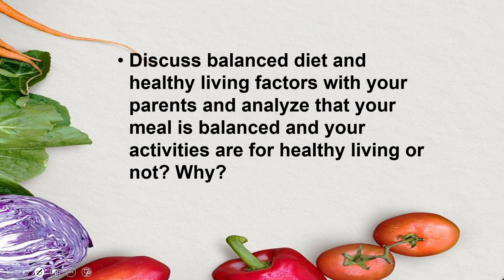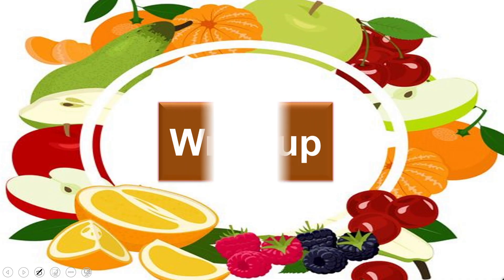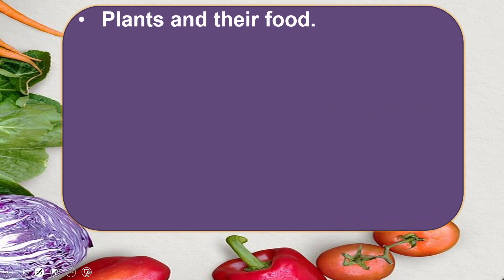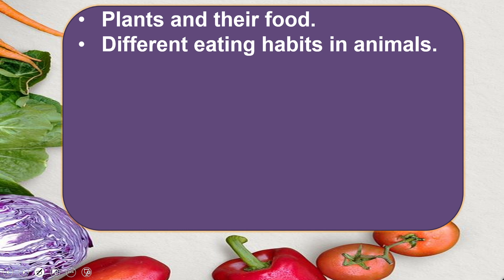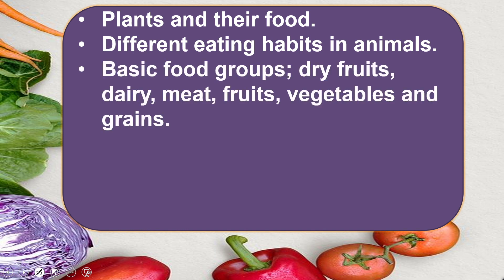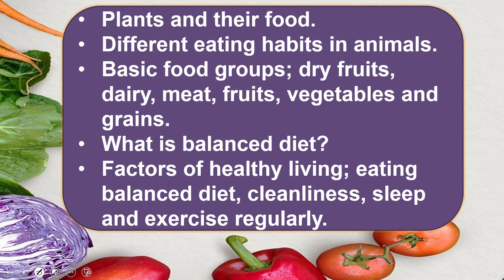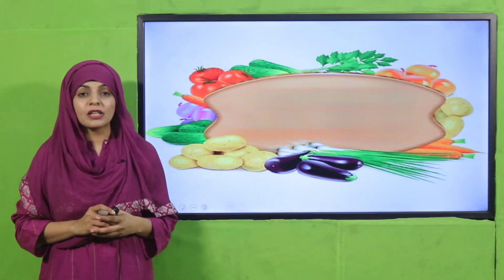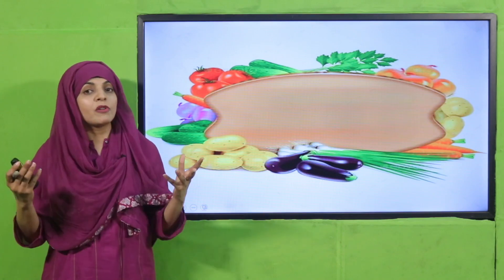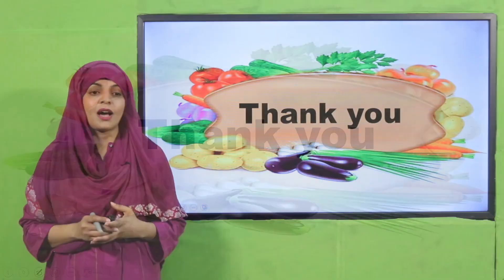Let's recap what we learned from this chapter: plants make their own food; different eating habits in animals; basic food groups including dry fruits, dairy, meat, fruits, vegetables, and grains; what a balanced diet is; and the factors of healthy living — eating a balanced diet, cleanliness, sleep, and regular exercise. I hope you have learned a lot from this unit. Keep everybody around you safe, have a good day, thank you so much, and Allah Hafiz.